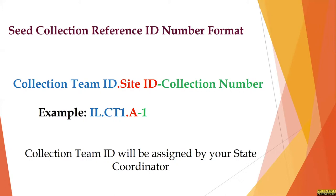The Project Wingspan teams will be using a special format called the Seed Collection Reference Number, which includes three parts: the Seed Collection Team Reference ID, which is your state abbreviation and collection team number; the project site ID, represented by letters A through Z; and the collection number. Seed Collection Reference numbers will be unique and sequential from year to year and will never be repeated. If the last collection from a previous year was 34, then the next year's collection number would start with 35. Each new site should be unique and sequential, and you'll be assigned a collection team reference ID by your state coordinator.